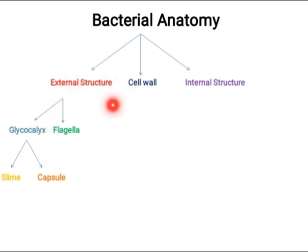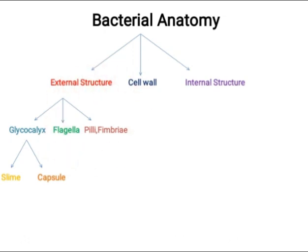We also classify bacteria on the basis of flagella. Another external structure is pili. Pili are important because they facilitate the conjugation process in bacteria. These were the external structures of bacteria.